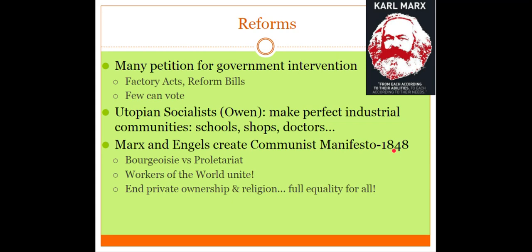Reforms — people did try to fix these problems. Not everyone was cool with children getting maimed or kids working 16 hours in a mine. Petitioning the government was an early approach, but the government didn't want to fix things because business was good. The middle class wanted votes, but they didn't want reforms — and they didn't want votes for everyone, just for themselves. Utopian socialists like Robert Owen saw this firsthand. He owned a factory that was doing well, but was sickened by the suffering of people. So he built societies with schools, shops, doctors, and jobs — a perfectly provided-for little bubble. It just didn't work. There wasn't enough profit margin, and as the rest of the world was greedy, Robert Owen fell behind.